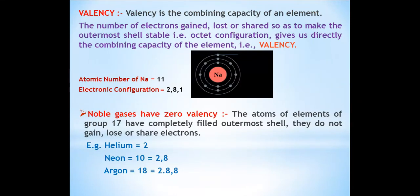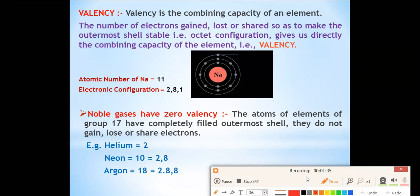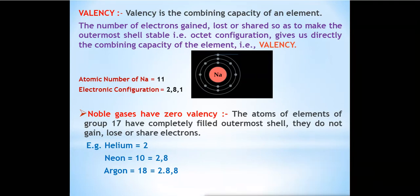So what is valency? The simple definition of valency is: valency is the combining capacity of an element. If the question comes in your exam, you can write this definition. You can also write the second definition: the number of electrons gained, lost or shared in order to make the outermost shell stable — that is, octet configuration — gives us the combining capacity of the element, that is valency.